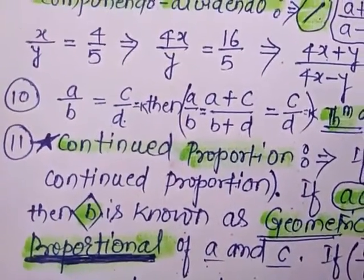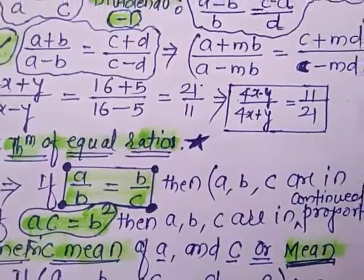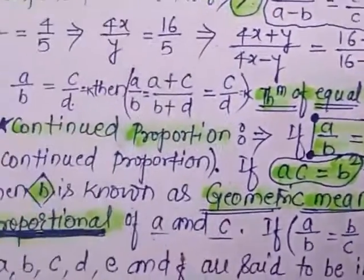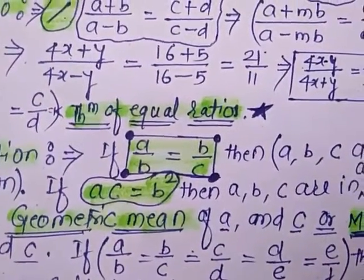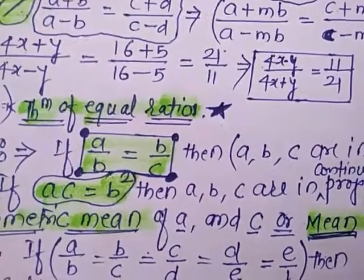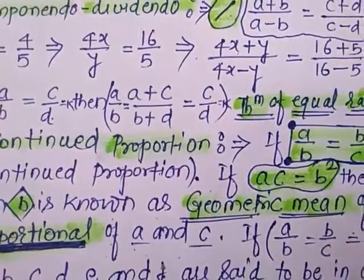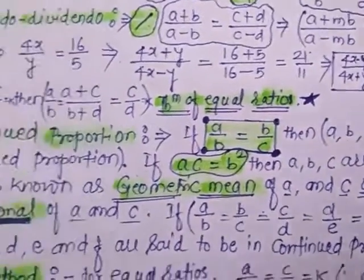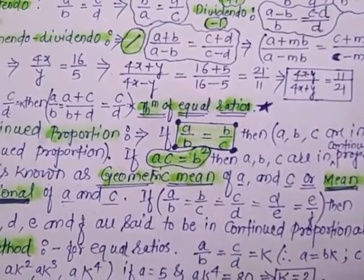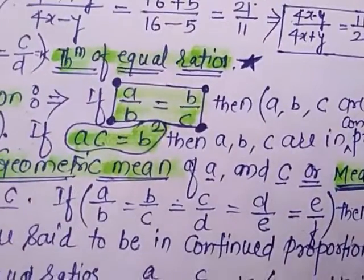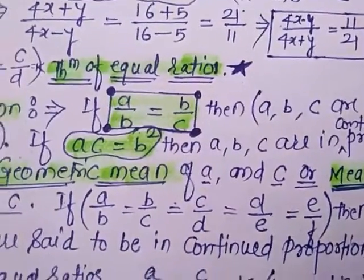The next topic is continued proportion. If A/B is equal to B/C, then A, B, C are in continued proportion. B is known as the geometric mean of A and C, or the mean proportional of A and C. If A/B is equal to B/C is equal to C/D is equal to D/E is equal to E/F, then A, B, C, D, E, and F are said to be in continued proportion.